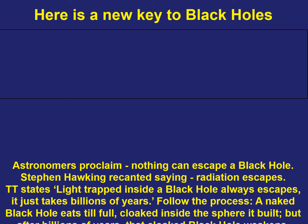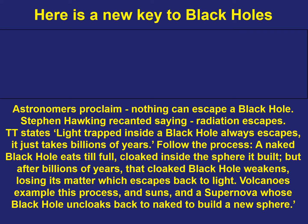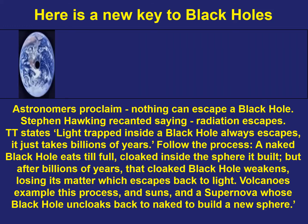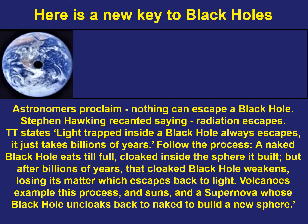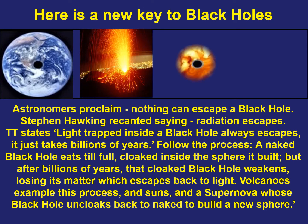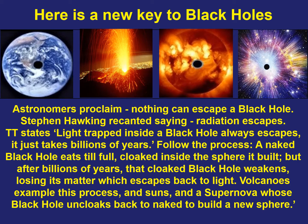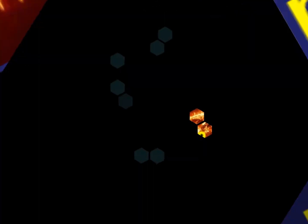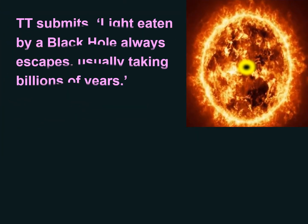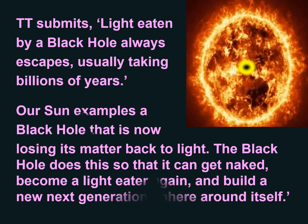Here's a new key to black holes. Astronomers proclaim nothing can escape a black hole, but Stephen Hawking recanted, saying radiation escapes. Trillion Theory states light trapped by a black hole always escapes — it just takes billions of years. A naked black hole eats till full, cloaked inside the sphere it built, but after billions of years that cloaked black hole weakens, losing its matter which escapes back to light. Volcanoes and suns example this process, as does a supernova whose black hole uncloaks back to naked to build a new sphere. Our sun examples a black hole now losing its matter back to light, so that it can get naked, become a light eater again, and build a new next-generation sphere around itself.